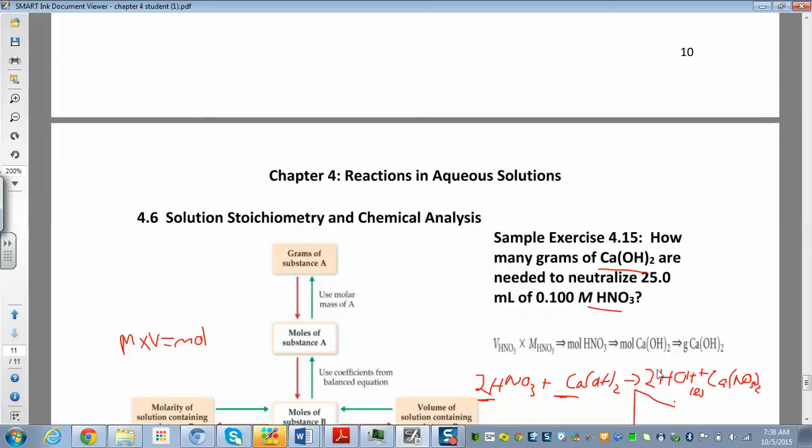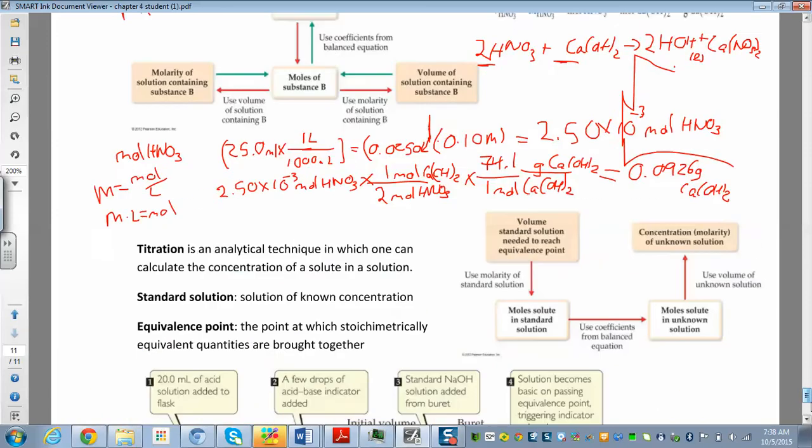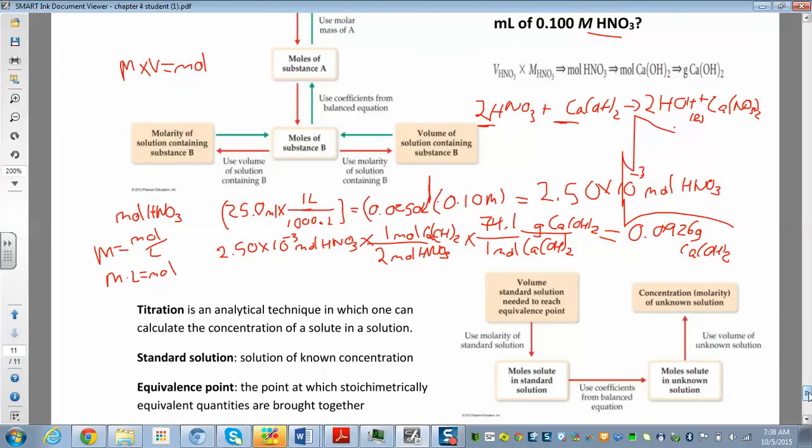When you work all that out, you will get 0.0926 grams of calcium hydroxide. That's our final answer. There we go.